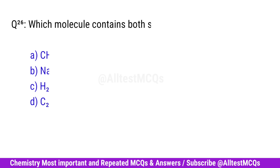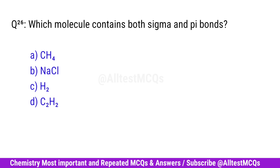Question No. 26. Which molecule contains both sigma and pi bonds? Right option is D. C2H2.